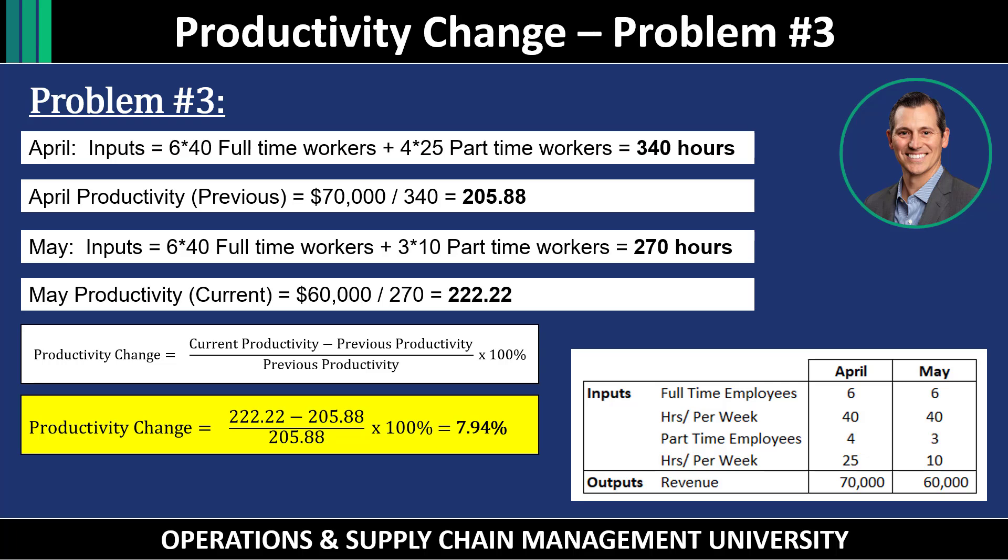So even though revenue and outputs went down from April to May, so did the inputs, meaning the business was actually more productive in May.